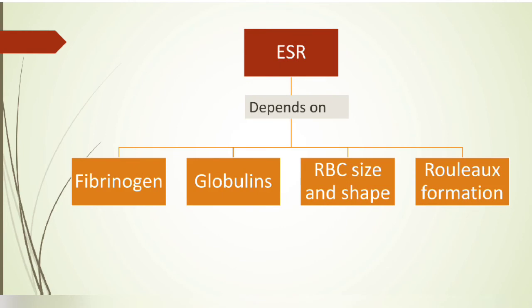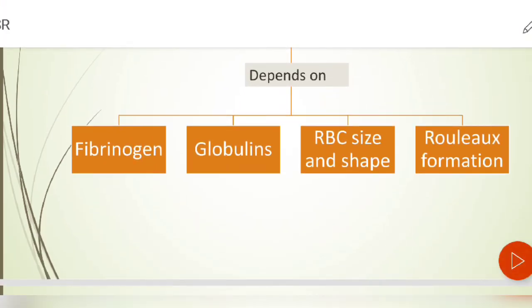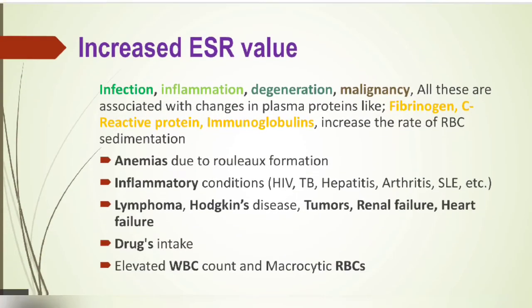ESR majorly depends on plasma fibrinogen, globulins, RBC size and shape, and rouleaux formation. RBC shape also matters — for example, if a patient has abnormally shaped RBCs like crescent-shaped cells, the ESR will be raised.